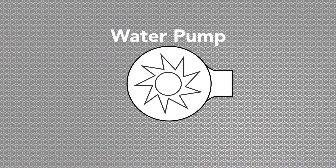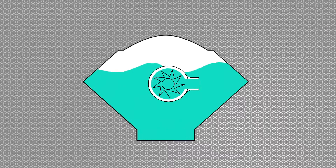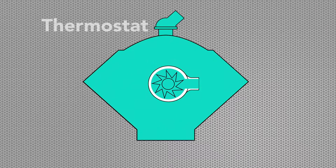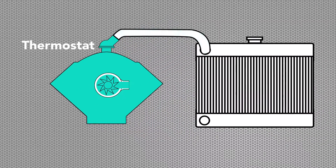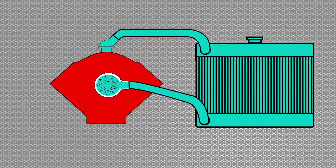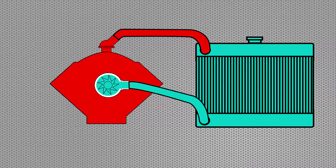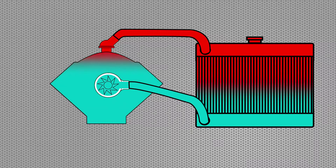The coolant flow starts at the water pump, flows through the engine block, through the thermostat, through the radiator, and back to the water pump. As the coolant flows through the system, it picks up heat in the engine and flows to the radiator where it is cooled and then returned to the engine.